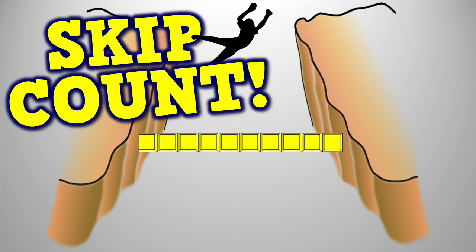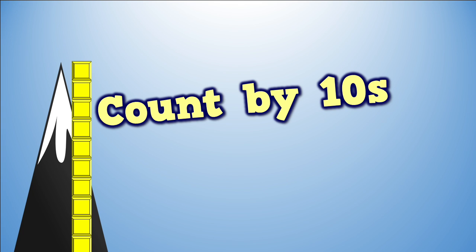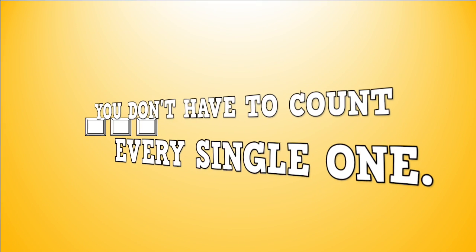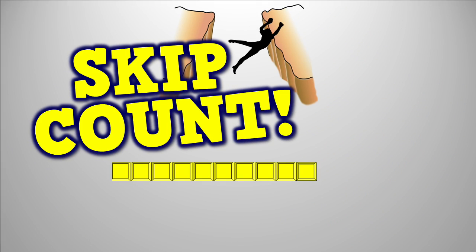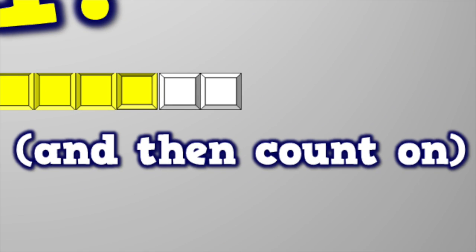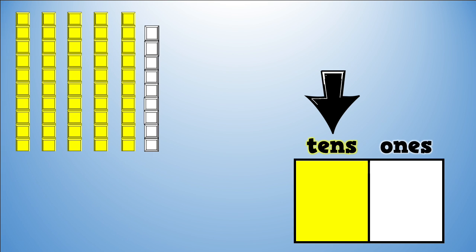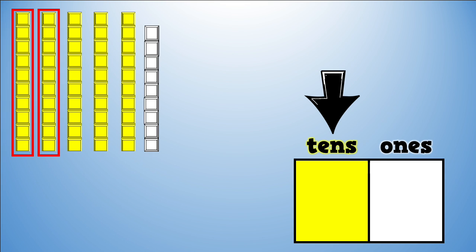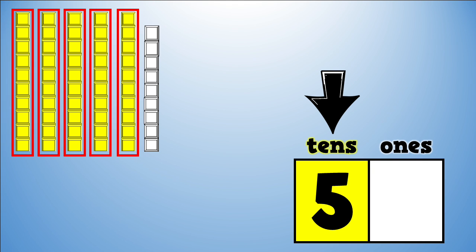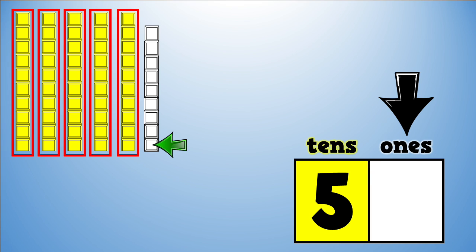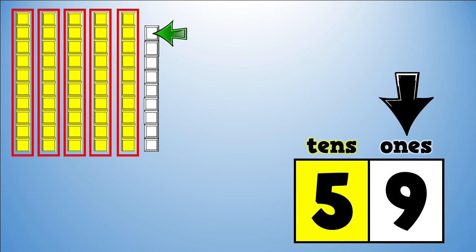Skip count and then count on. Count by tens and then by ones. You don't have to count every single one, just skip count and then count on. Let's count the number of tens: one, two, three, four, five. Five groups of ten. Let's count the extra ones: one, two, three, four, five, six, seven, eight, nine. Nine extra ones. What's that number? Fifty-nine. Correct!